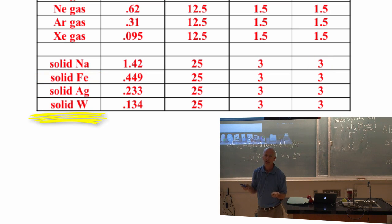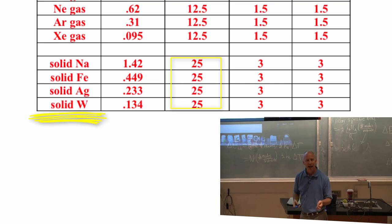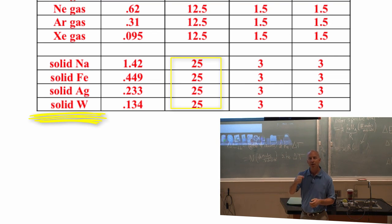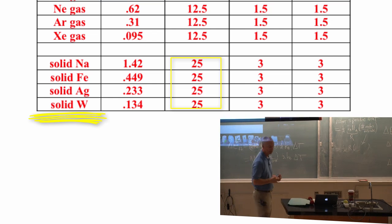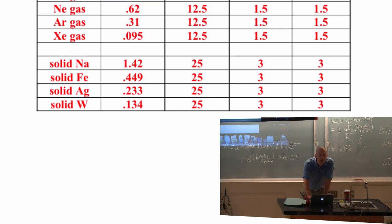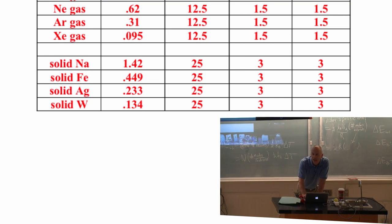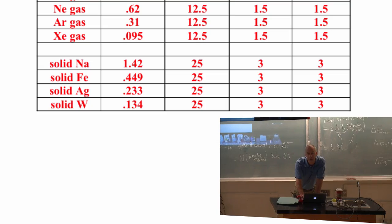How about tungsten? Tungsten is what you use in filaments in incandescent lights. You can get that stuff glowing bright white hot. And it's still a little solid wire. Really strong bonds. But the molar specific heat... Or the... Yeah. Molar specific heat... Exactly the same. Because it's the same number of ways of putting energy in. The strength of the bond does not matter. Any questions about that one? The strength of the bond. Very important for bond energies. And essentially irrelevant for thermal energies.